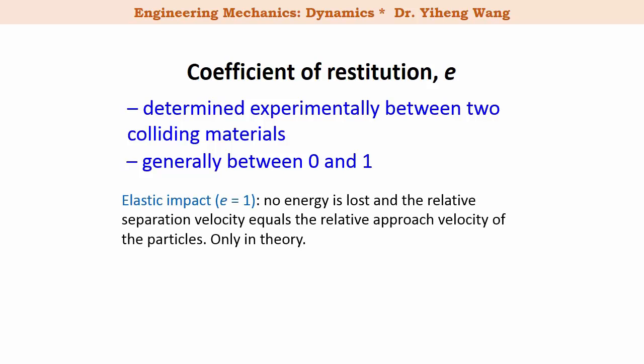A value of 1 refers to a so-called perfect elastic impact, which means that the two colliding particles would quickly restore to their original shape and size after the initial deformation caused by collision. There is no energy lost to deformation, or sound, or other type, and the total energy is conserved for the system, and the two particles will separate at the same relative speed as they were approaching. And this is only in theory.